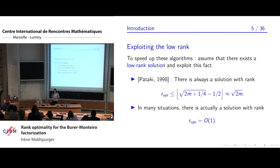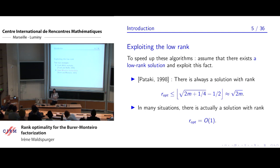To exploit the fact that there is a solution with low rank, there are two main families of methods: Frank-Wolfe methods and the Burer-Monteiro heuristic. Both are interesting, but in this talk I will focus only on the Burer-Monteiro factorization.